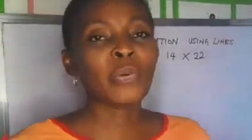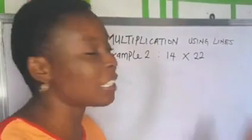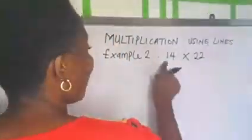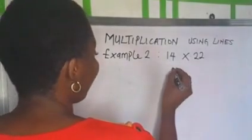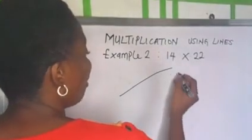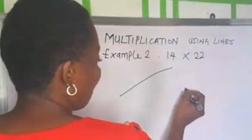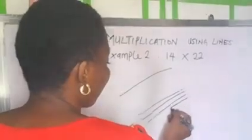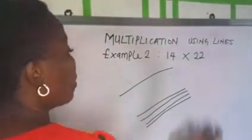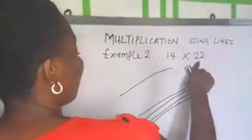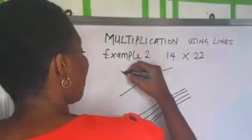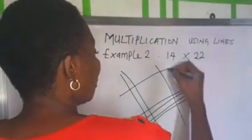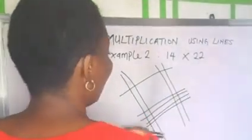Let's take example number two. If we are asked to multiply fourteen by twenty-two, that is fourteen times twenty-two. I am going to draw one line to represent one. Four lines, leave a gap and then draw four lines to represent four. Move to the opposite direction and then represent two with two lines. Leave a gap and represent the other two with two lines.